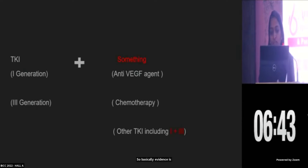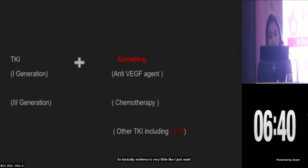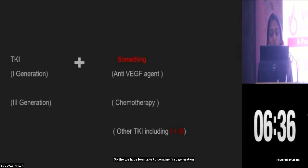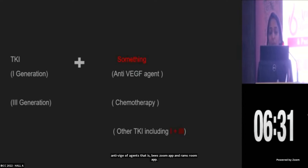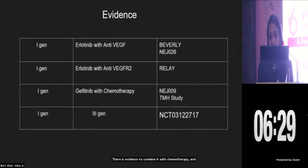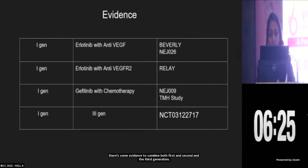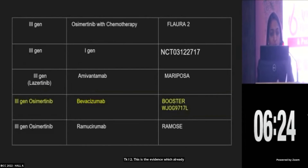I'll walk you through the entire evidence we have. We have been able to combine first-generation TKI with anti-VEGF agents — that is bevacizumab and ramucirumab. There is evidence to combine it with chemotherapy, and there is some evidence to combine both first-, second-, and third-generation TKIs too. This is the evidence which Dr. Wamshi had briefly mentioned.